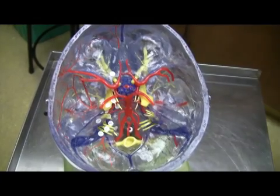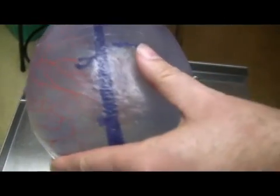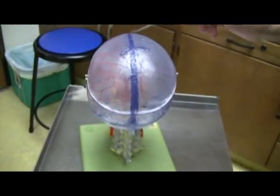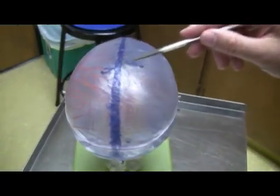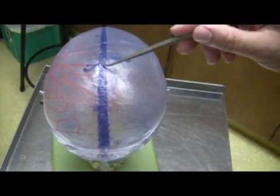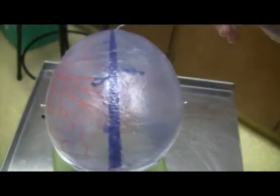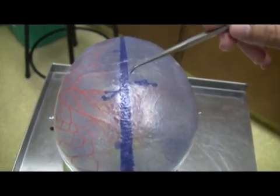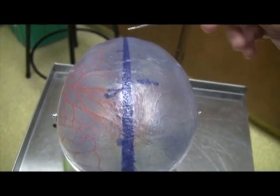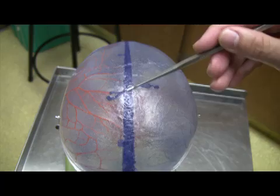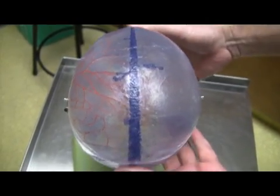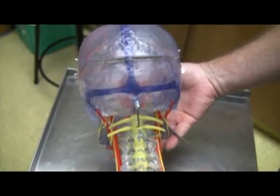I'm going to take this top and put it back on the skull. The very first thing here is the superior sagittal sinus, where we find the arachnoid granulations for returning cerebrospinal fluid to the venous system. This blue indicates that this is venous blood within the superior sagittal sinus.